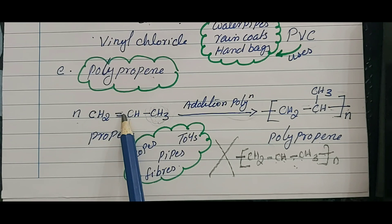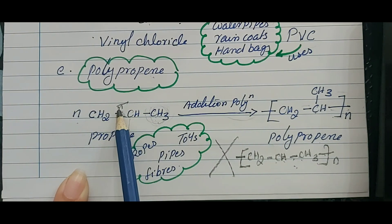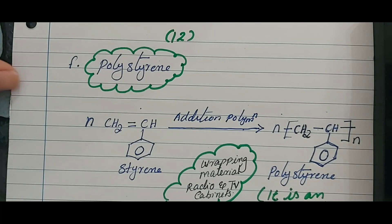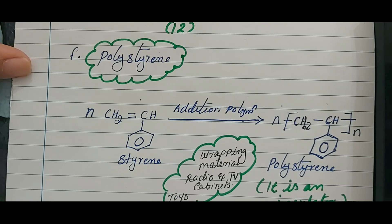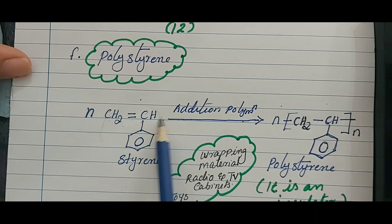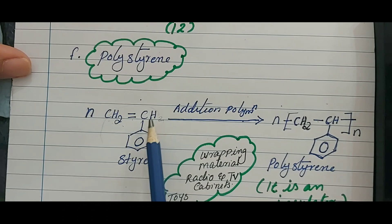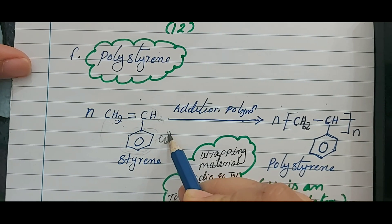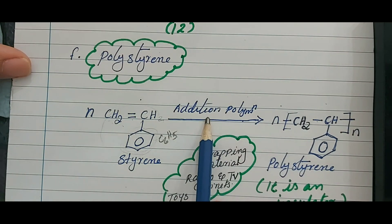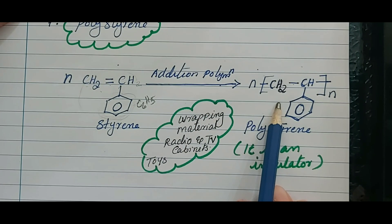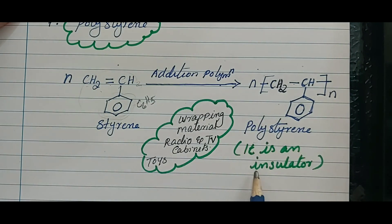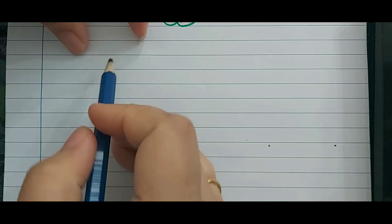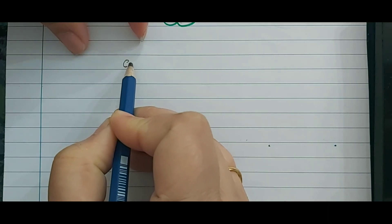The last addition polymer is polystyrene. The monomer styrene comes from ethene — one hydrogen is replaced by a phenyl group (C₆H₅, not benzene C₆H₆). Addition polymerization gives polystyrene. Polystyrene is an insulator and is used as a wrapping material and for making TV and radio cabinets.